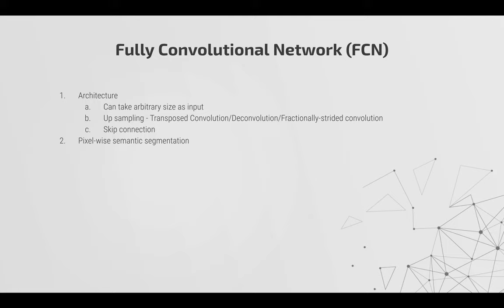The first is its architecture allows it to take arbitrary size as input. This is very important because during that time frame — 2014, 2015, 2016 — what you had were architectures like VGG and ResNet. They have a limitation: they can only take fixed size as input because they have this fully connected layer. After doing a bunch of convolution operations, you do a flatten operation, which becomes a 1D dimension. That 1D dimension is exactly the point that restricts the architecture from taking arbitrary input size.